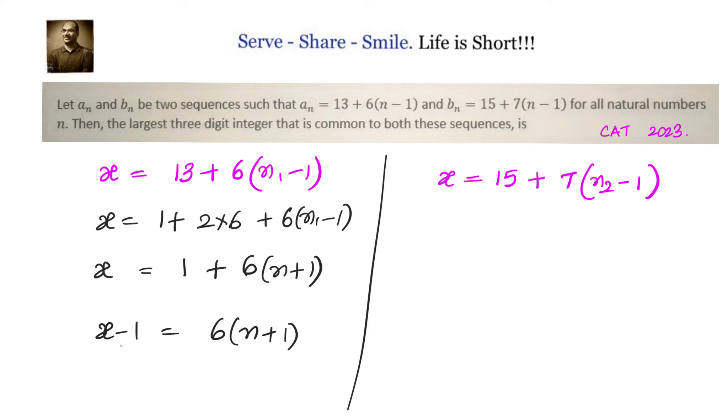Let us see what happens here. We have x equals 15, which can be written as 1 plus 2 into 7 plus 7 into n2 minus 1, which is 1 plus 7 into n2 minus 1 plus 2, that is n2 plus 1. This means x minus 1 equals 7 into n2 plus 1.